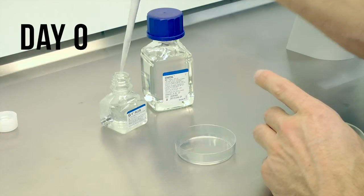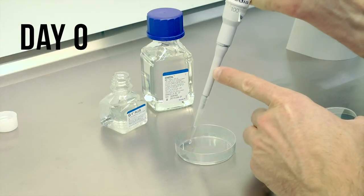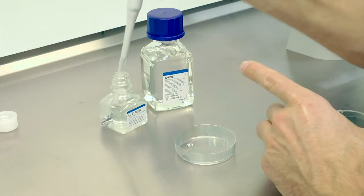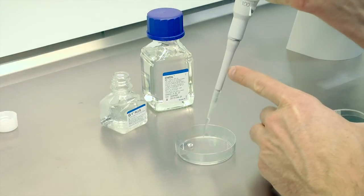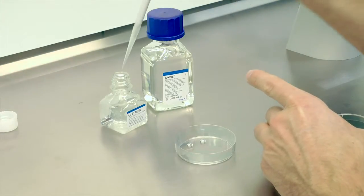Prepare micro droplet dishes for the washing and culture of embryos with G1 Plus. Use 50 microliters of the G1 Plus to prepare your micro droplet dishes.